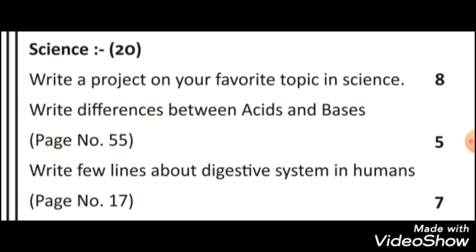Second question hai aapka: write differences between acids and bases. Page number 55 book mein, page number 55 par aapko acids aur bases mein difference diya rakha hai, toh wahaan se dekhkar ye likhna hai — yahan sirf aapko book ki zaroorat hogi. And last question hai aapka: write few lines about the digestive system in humans. Humans ke digestive system ke baare mein diya rakha hai aapko book mein page number 17 par, toh book se dekhkar aapko human digestive system par few lines likhni hain.